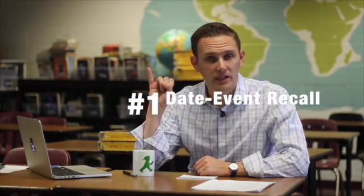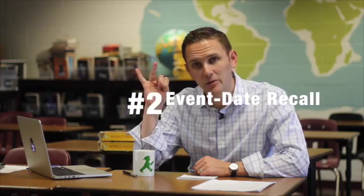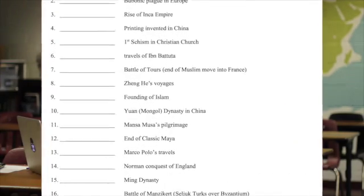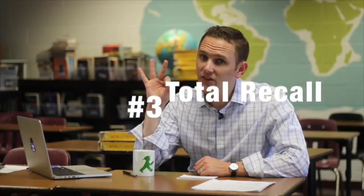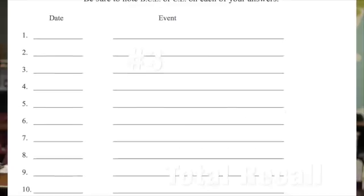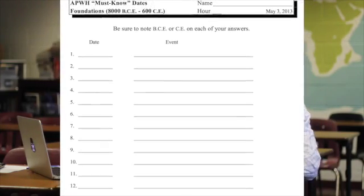You'll know you're done with this assignment when you can do three things successfully. Thing one: you'll be able to hear any of these dates and tell me the event that corresponds to it. Thing two: you'll be able to hear any of these events and tell me the date. Thing three — the hard one: you'll receive a blank sheet with a date line and event line, and I can say '8,000 BCE to 600 CE — what are the must-know dates from that period?' and you'll just list them all: date, event, date, event. Intense, right?